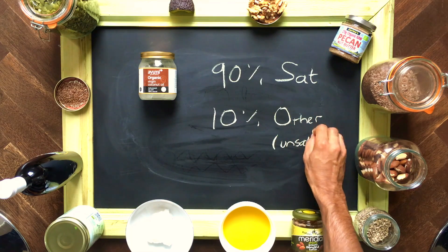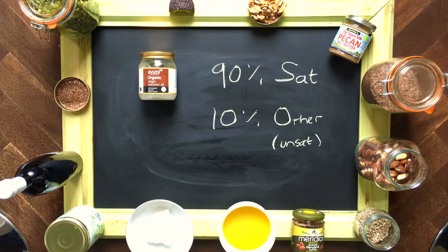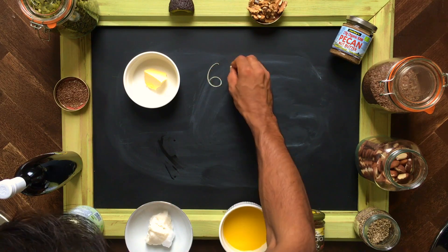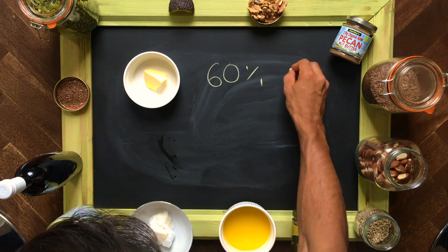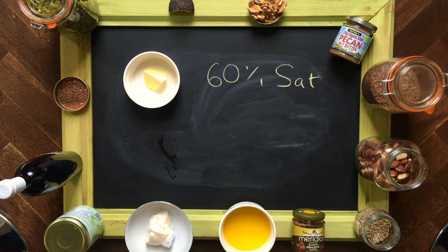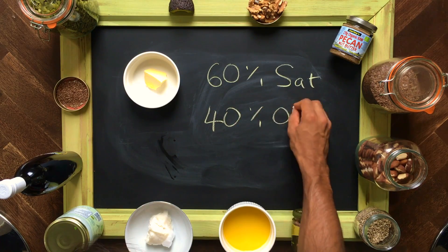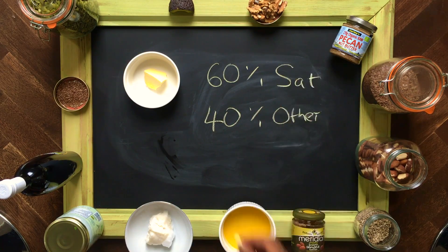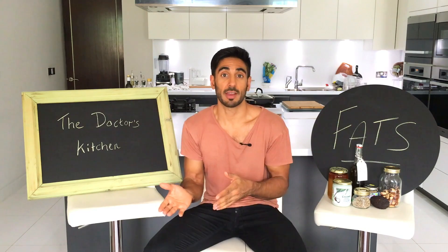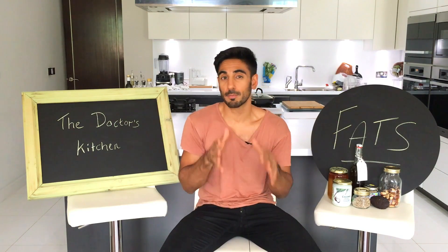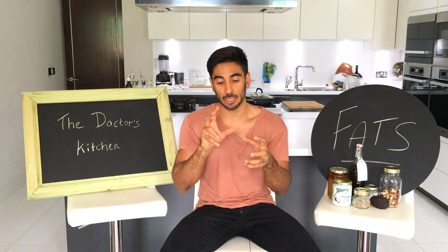Coconut oil is about 90% saturated, whereas the other 10% is unsaturated. Butter, for example, is 60% saturated fat, while the other proportion is largely unsaturated. So when something is referred to as a saturated fat or an unsaturated fat, that's blurring it a bit — it's usually a multitude of fats that make up that particular ingredient or product.